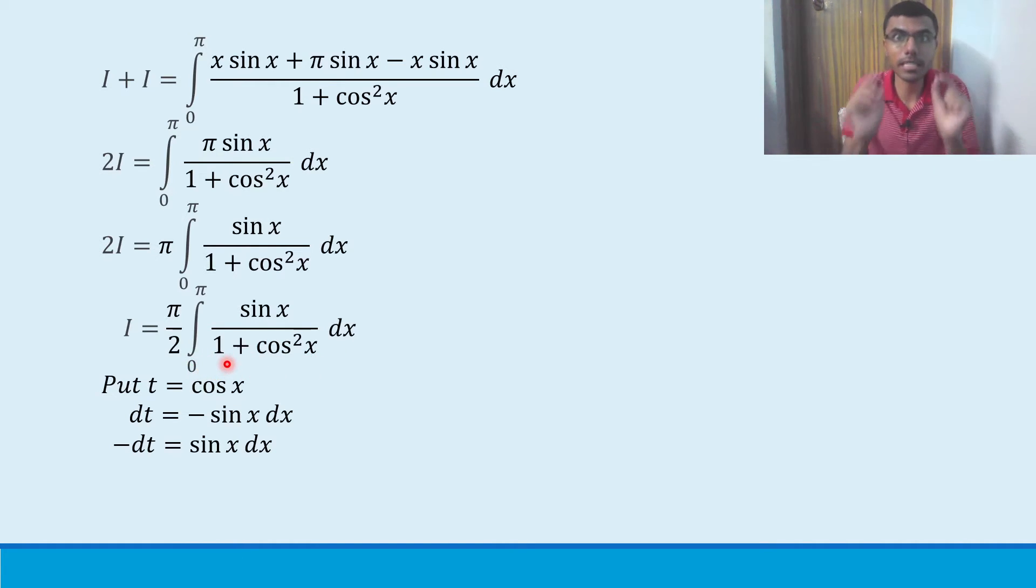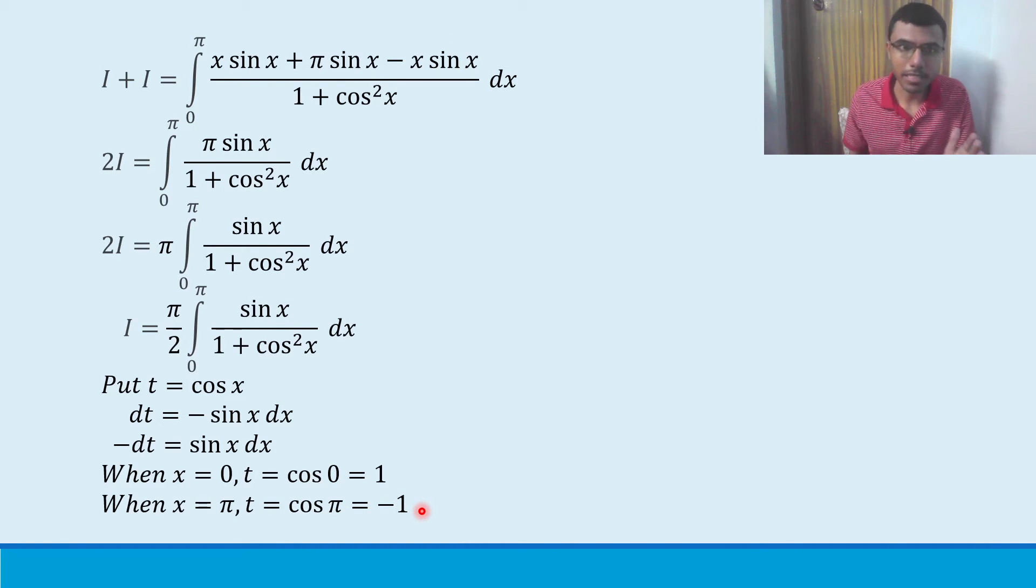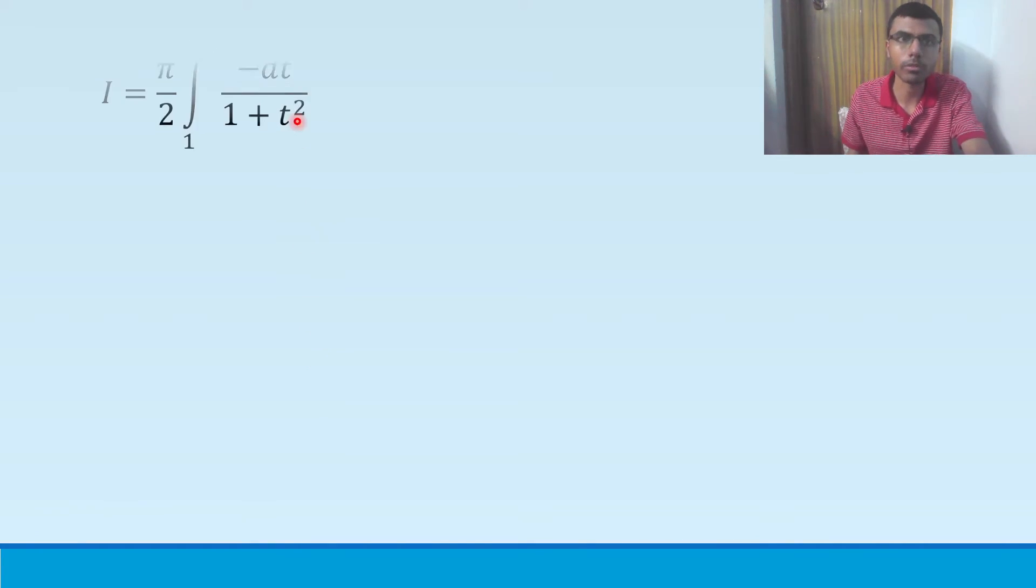See how I am changing everything. Sin x into dx, this sin x into dx will be nothing but minus dt. In place of cos x, I am going to put t. So basically cos square x is there, means t square I will get here. Next, the limits also will change. One most important thing is limits will also change. X is going from 0 to pi. So first when x is 0, what will be t? When x is 0, t will be cos 0, which is nothing but 1. Next when x is pi, t will be cos pi, which is nothing but minus 1.